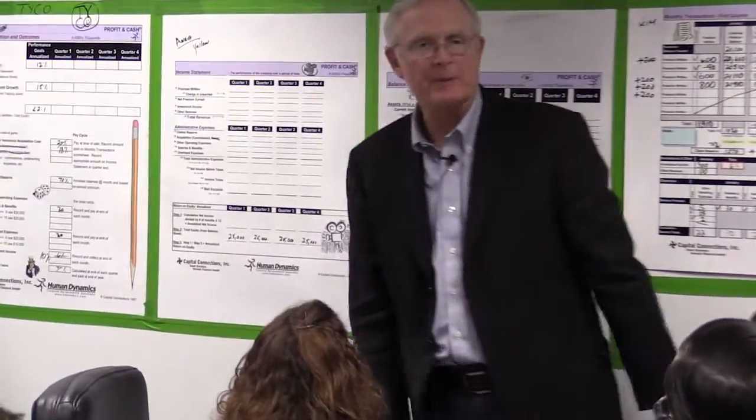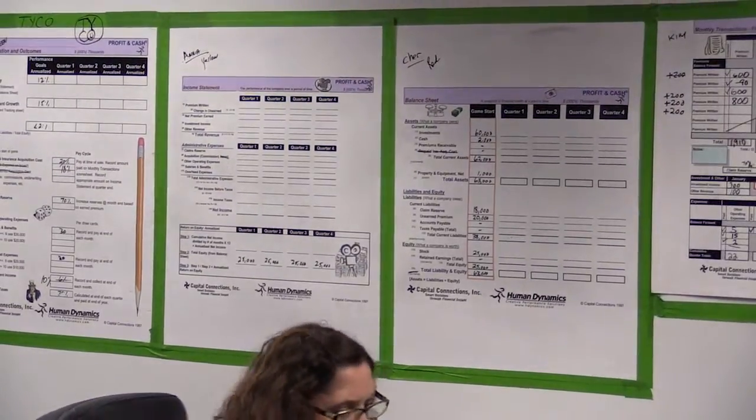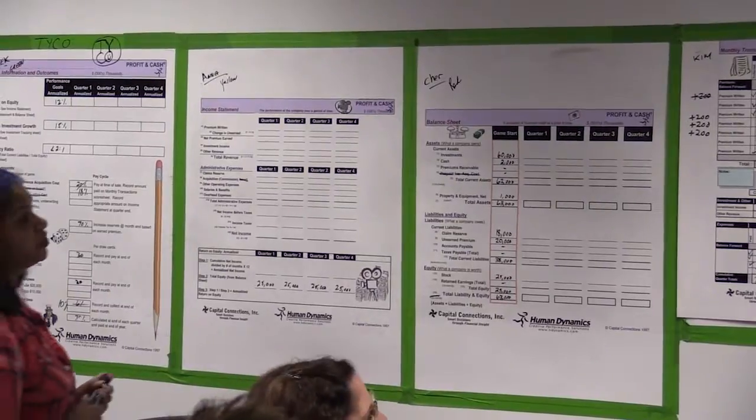And the first item we're looking for is the premium written. How much premium did we write in the whole quarter? In the entire quarter?